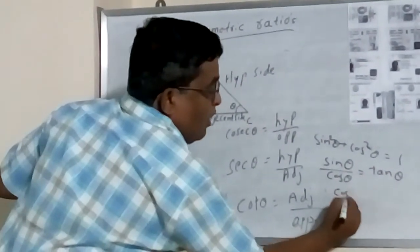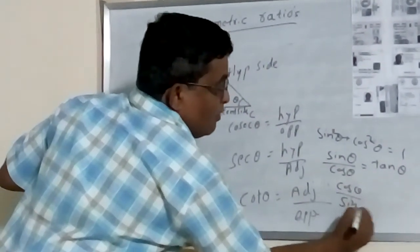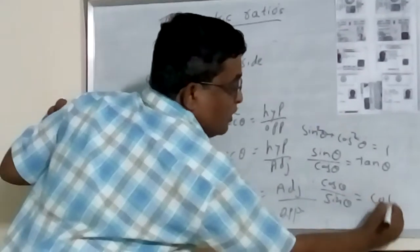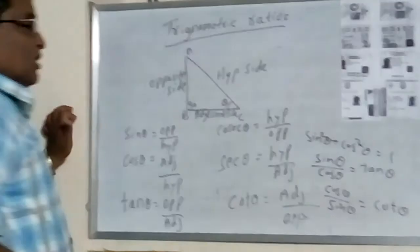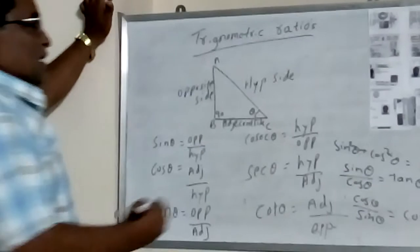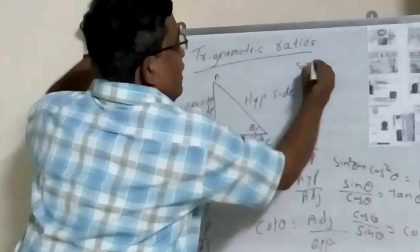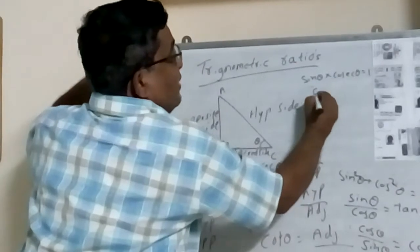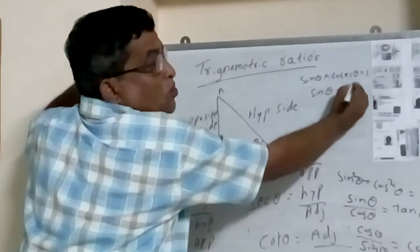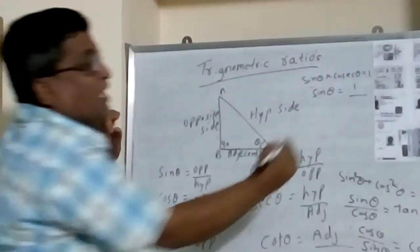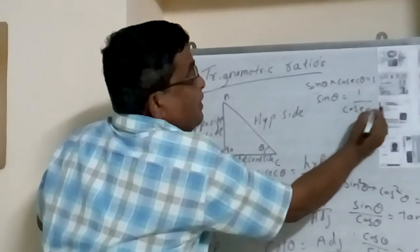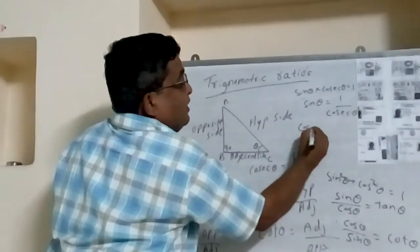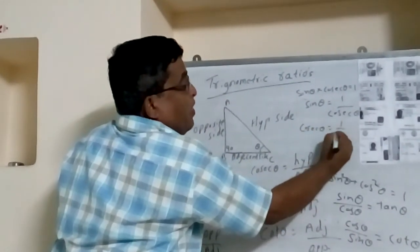Cos θ by sin θ equals cot θ. And sin θ times cosecant θ equals 1. Therefore, sin θ equals 1 over cosecant θ. In the same way, cosecant θ equals 1 over sin θ.